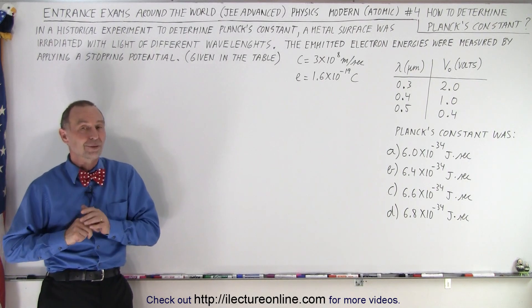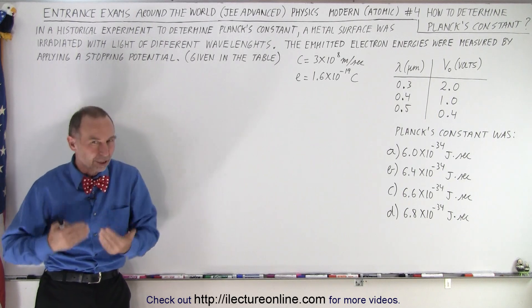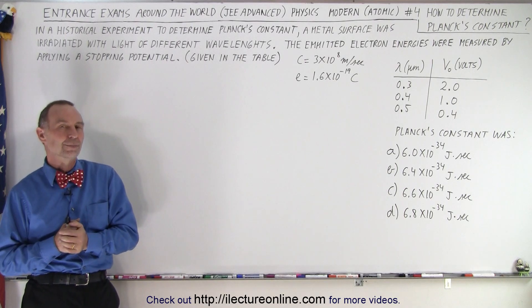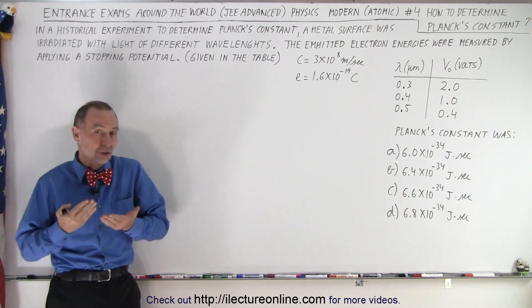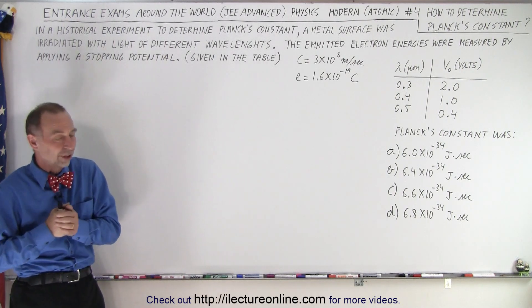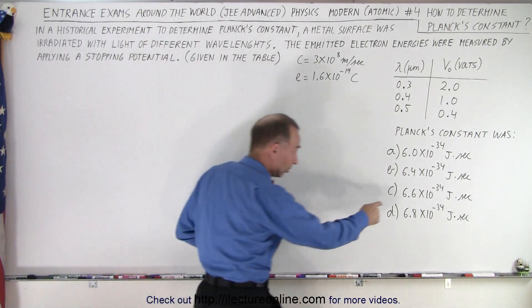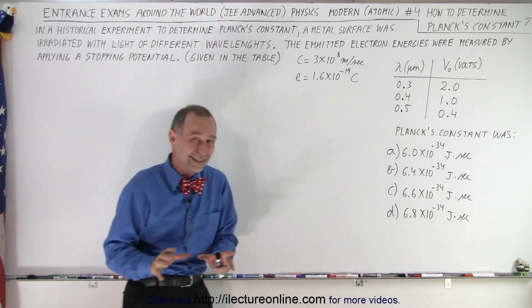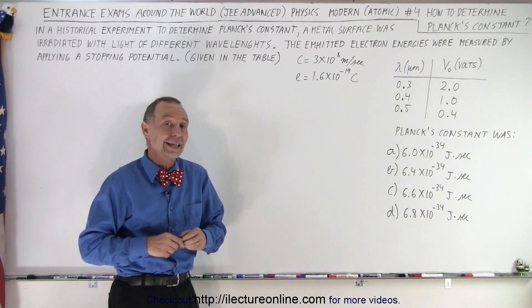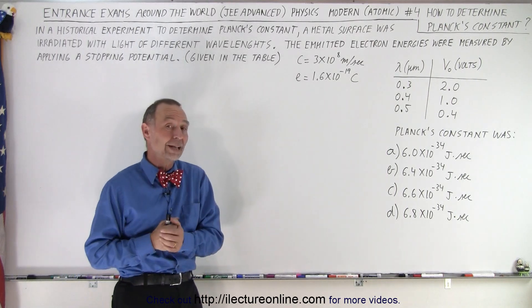What's very interesting about this one is that it also applies to an actual brilliant experiment conducted to determine the value of Planck's constant, which is 6.626 times 10 to the minus 34 joule-seconds. Based on that, you may look at the answers and pick C as the closest to the actual value — but that would be dangerous, because that may not have been the value determined by one of the earlier experiments. It could be any one of those four answers.